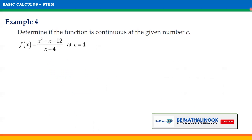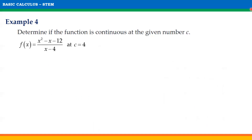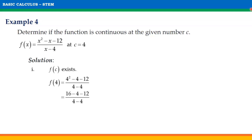For our last example, determine if the function f(x) = (x² − x − 12)/(x − 4) is continuous at C = 4. For the first condition, substituting 4 for x gives f(4) = (16 − 4 − 12)/(4 − 4) = 0/0, which is indeterminate. Since f(4) is indeterminate, condition 1 is not satisfied. Although we can already claim the function is not continuous at C, we check condition 2 to determine the type of discontinuity.